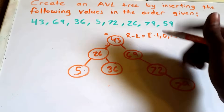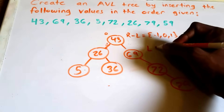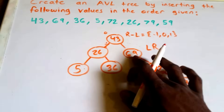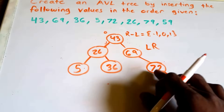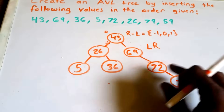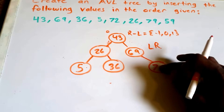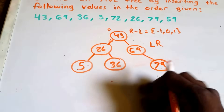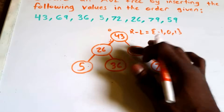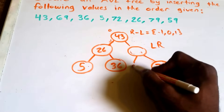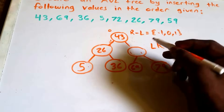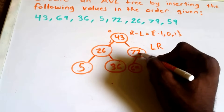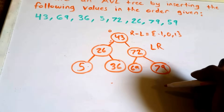We apply a left rotation. Node 69 drops down to the left of 72, 72 moves up to take 69's position, and 79 remains as the right child of 72. We bring up the value 72 to become the new subtree root.